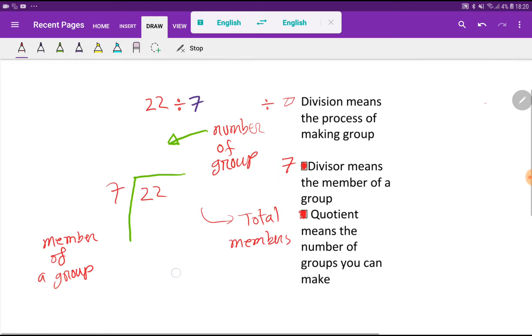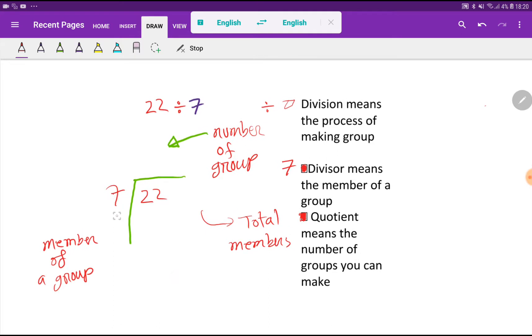Here 7 is a divisor. Divisor means member of a group. Here member of a group will be 7. That is, out of 22 people, how many groups you can form taking 7 at the same time. Here 22 is a dividend. Dividend means total members. Here total members is 22, and the member of a group will be 7.